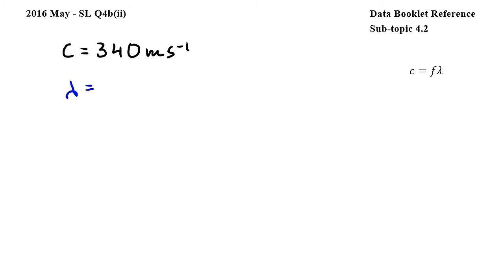Since the first maximum point is at 1.2 and the second maximum point is at 2.8, lambda, the wavelength, will be 1.6 meters.